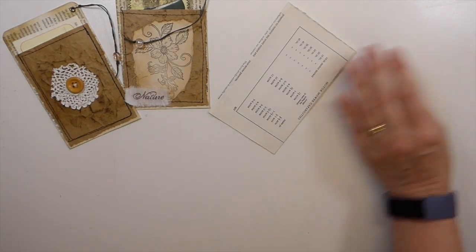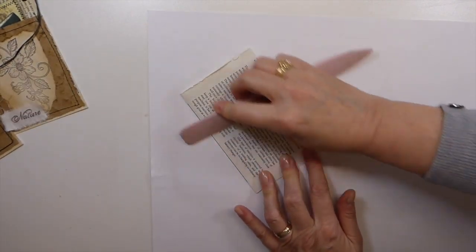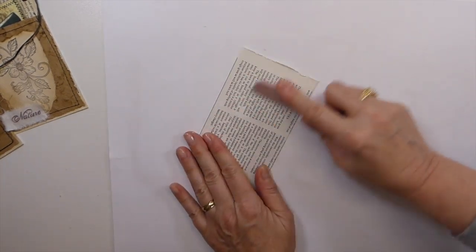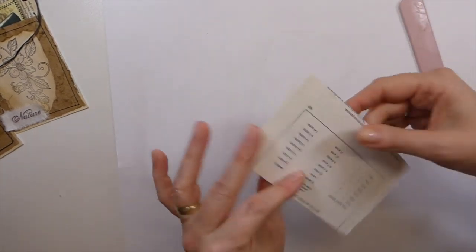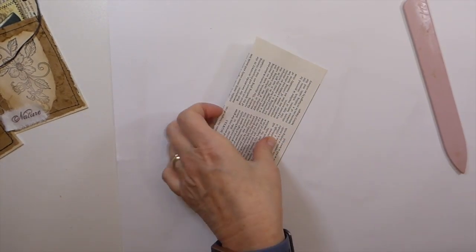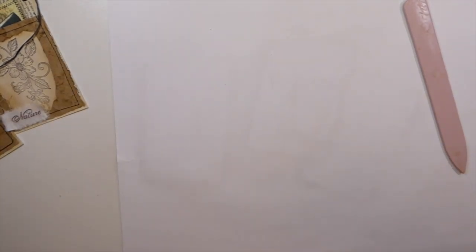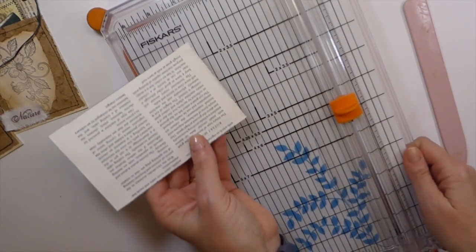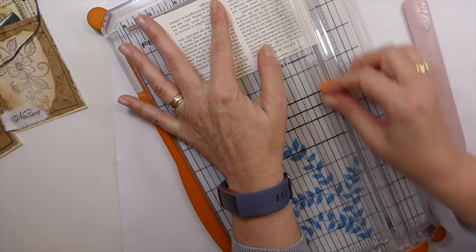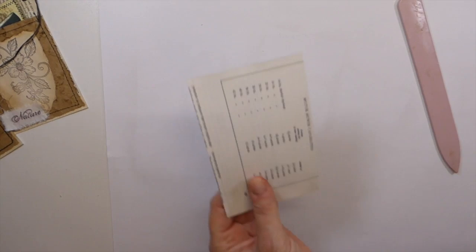Just get that glued down. You can use some glue sticks or whatever glue you want to use for it. I just happen to have that handy. Just get that down really good, let it dry, and then I decided to just snip off that rough edge. If you want to leave that you certainly could, but I'm just going to take that off quickly.